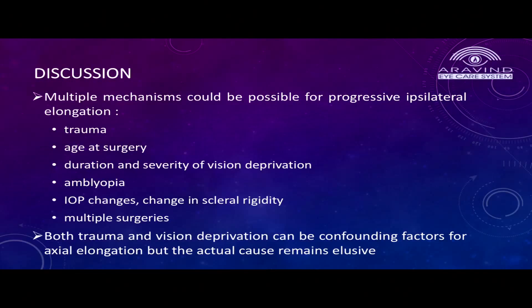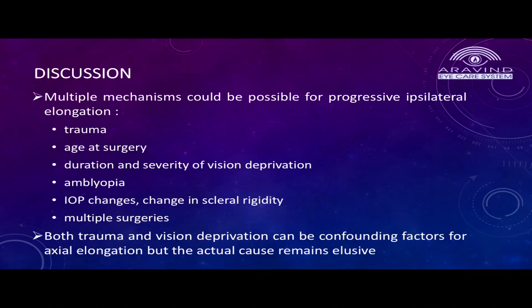Coming to discussion, multiple mechanisms have been postulated: trauma, age at surgery, duration, severity of visual deprivation, amblyopia, IOP changes, changes in scleral rigidity, and multiple surgeries. Both trauma and visual deprivation have been confounding factors for axial length elongation, but the actual cause still remains elusive.